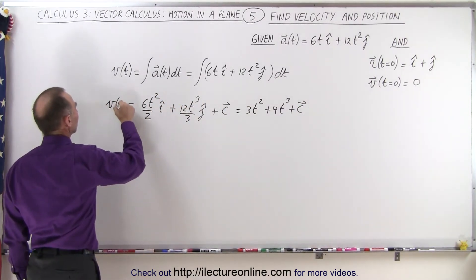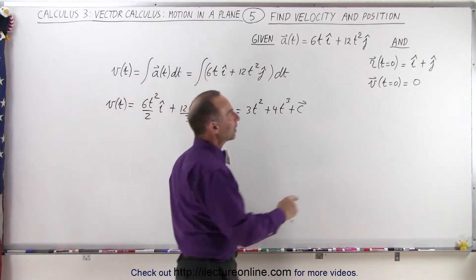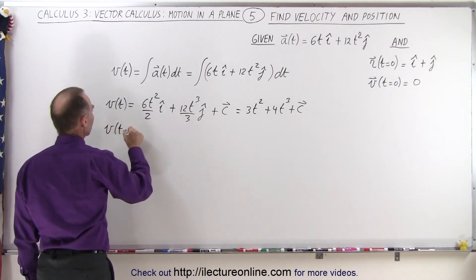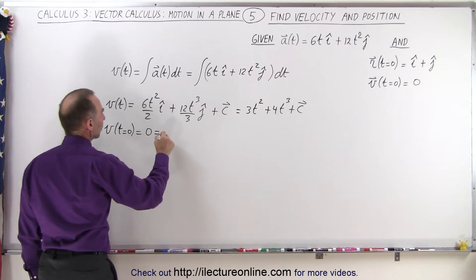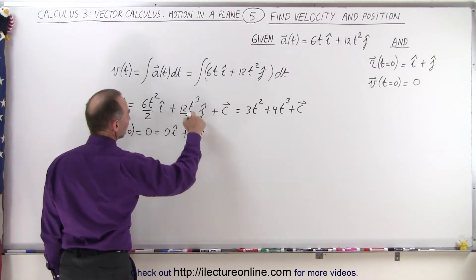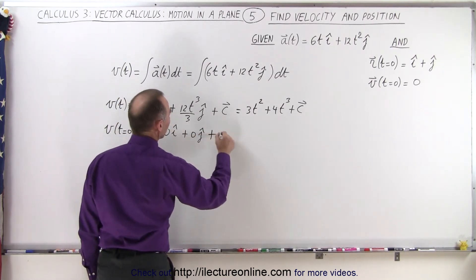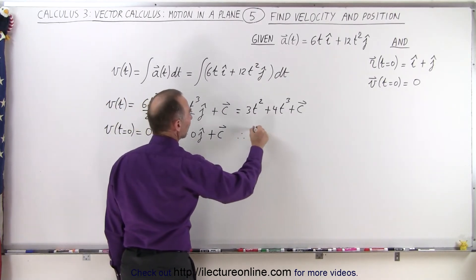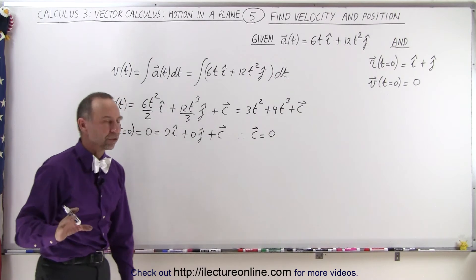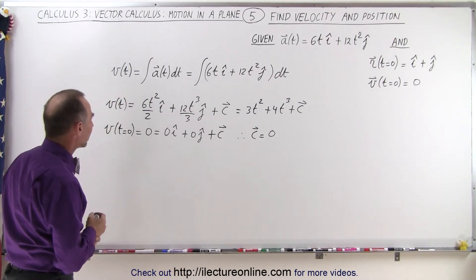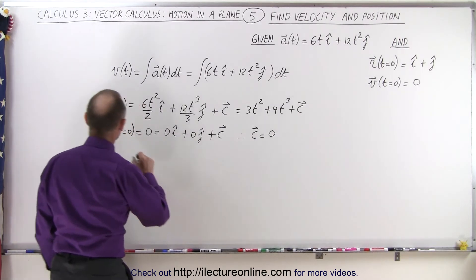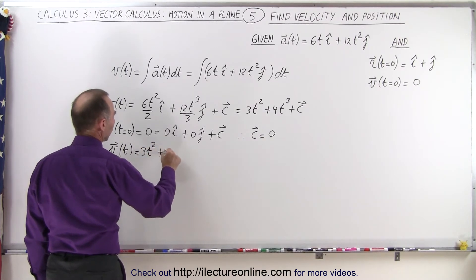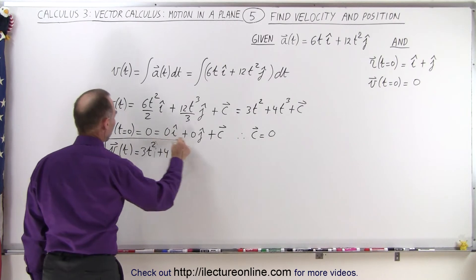This is going to be the velocity vector. They tell us that when t equals 0, the velocity vector equals 0. So v(0) equals 0 in the i direction plus 0 in the j direction — because the t terms go to 0 — plus some constant vector c. Since all of this equals 0, the constant vector c equals 0, so we don't have an additional constant added. The velocity as a function of time is simply 3t squared in the i direction plus 4t cubed in the j direction.